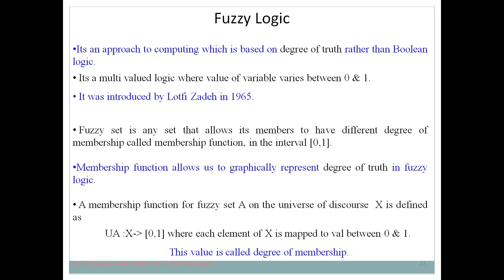The concept of fuzzy logic was introduced by Lotfi Zadeh in the year 1965. A fuzzy set is any set that allows its members to have different degrees of membership. Degree of membership and degree of truth are nearly the same concept. Degree of membership means you are deciding how much a particular element belongs to a set.